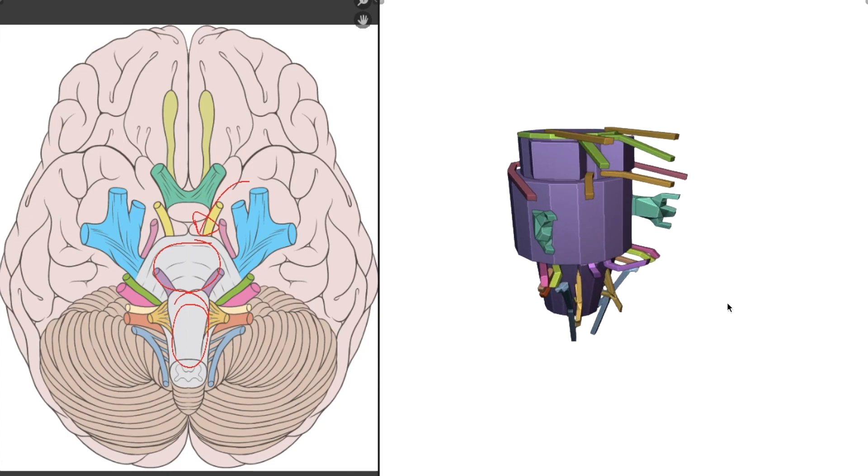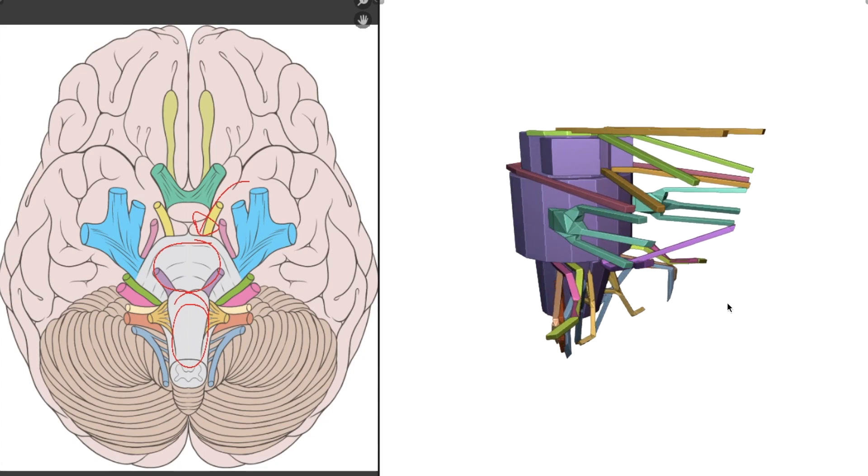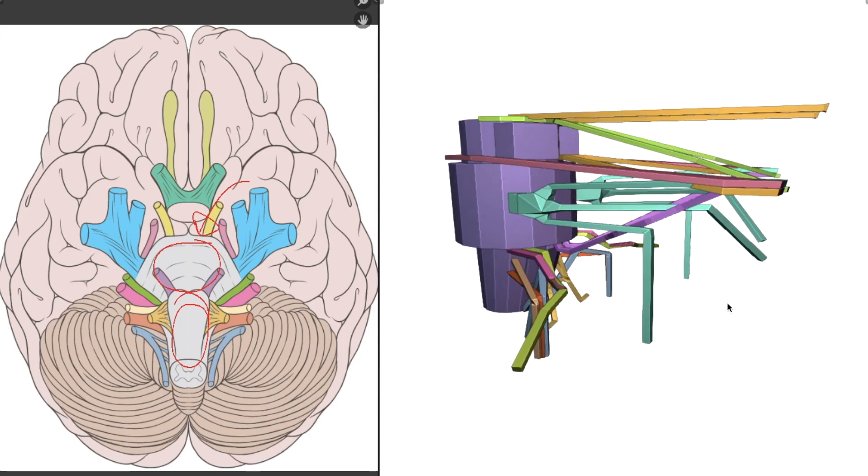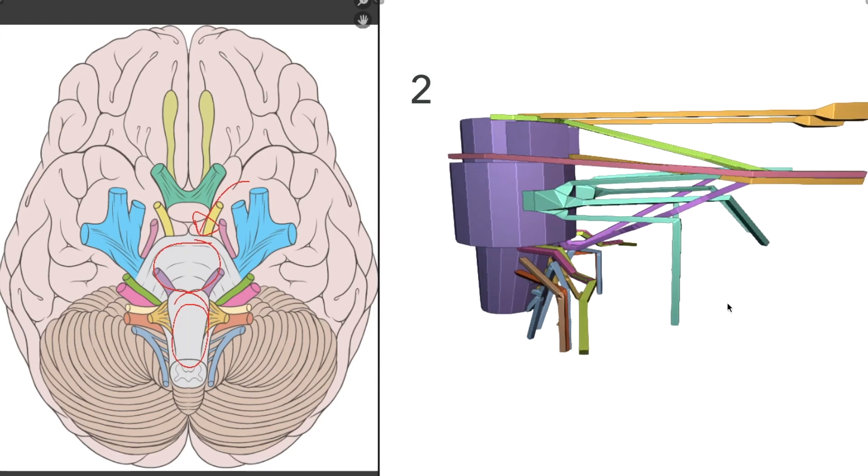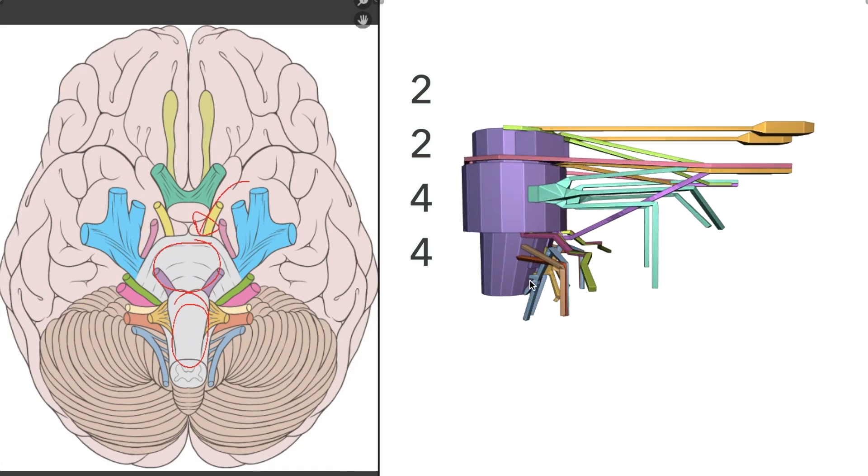Now let's grow out our cranial nerves and have a look at them side on. There are 12 of them in total. Two come from above the brain stem, coming from the brain itself. Two come from the midbrain, then there are four which come from the pons, and then four from the medulla.